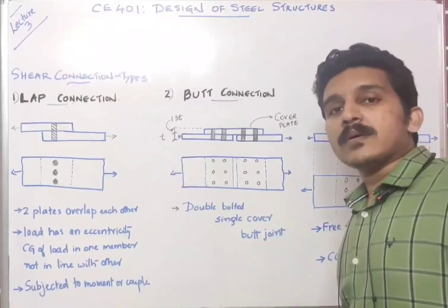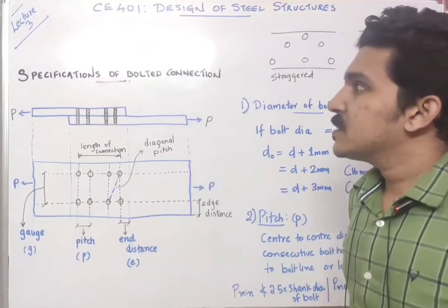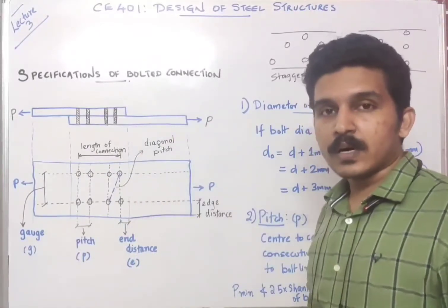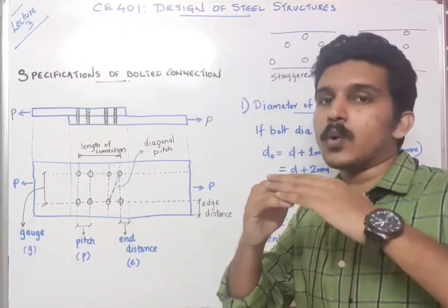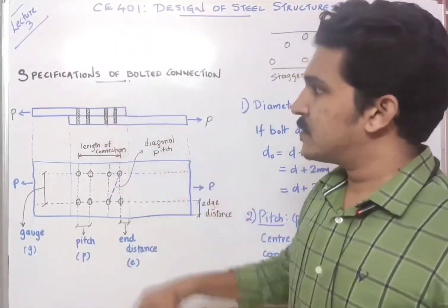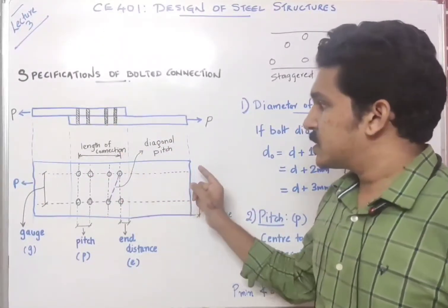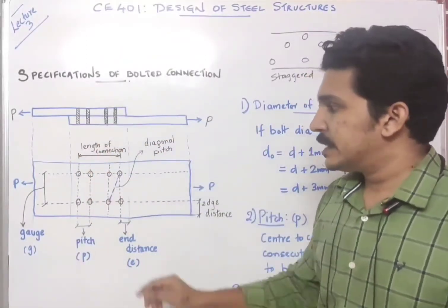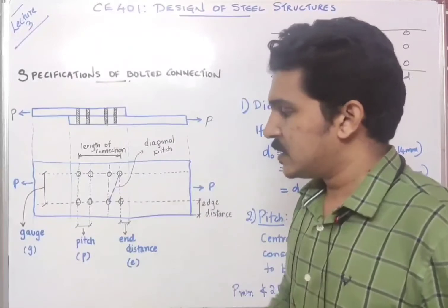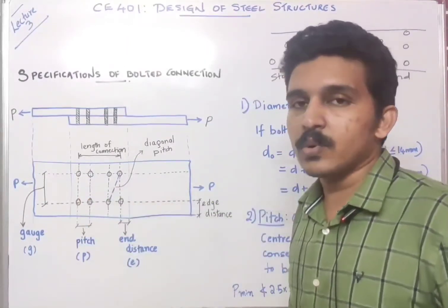Now let us discuss what are the different specifications involved in normal bolted connections. We are discussing the specifications of bolt connections with the help of a lap joint, where two plates are kept one on top of the other, overlapping each other. There are two plates acted upon by a load, connected with a couple of bolts. This is a plan view and a section view. The first important term we should know is pitch. Pitch is the center-to-center distance between consecutive bolts.